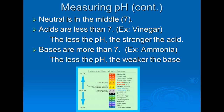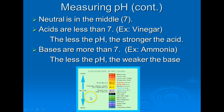Neutral is in the middle, and acids are less than 7. An example used in class is vinegar, which is the strongest acid you will use. The lower the pH, the stronger the acid — so battery acid or sulfuric acid is down near 0. Bases are more than 7; an example is ammonia. The lower the pH on the base side, the weaker the base — so something between 8 and 10 is a weak base.